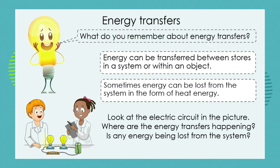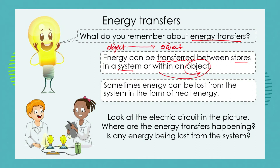Let's start by reminding you what you already know about energy transfers. You've learned that energy can be transferred between stores in a system — in other words, from one object to another, or within an object. We can see a transfer of maybe chemical energy to kinetic energy. We also observed in our last lesson that sometimes energy can be lost from the system.